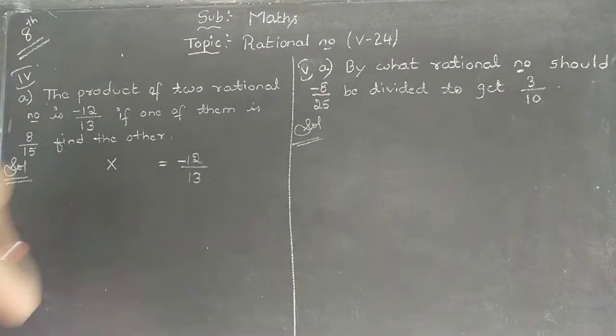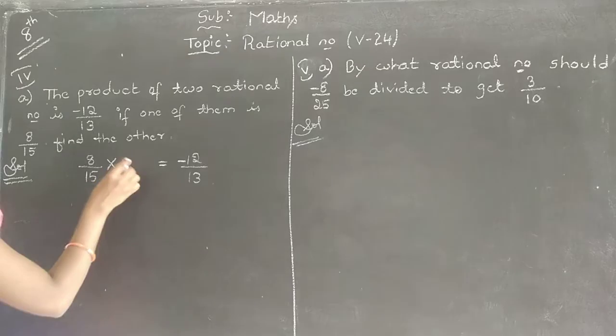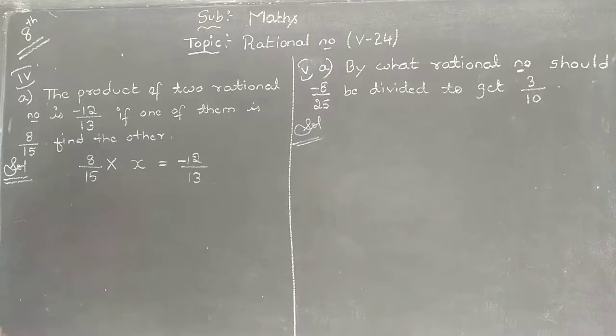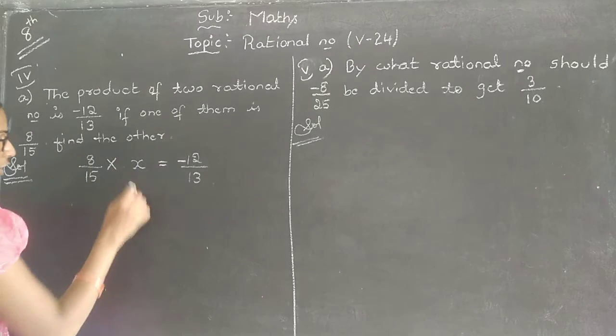If one of them is, I mean one of the rational number, they have given as 8 by 15. Find the other. Let the other be x. Now I need to find x. How to find it?